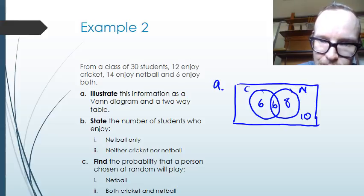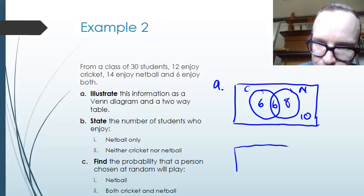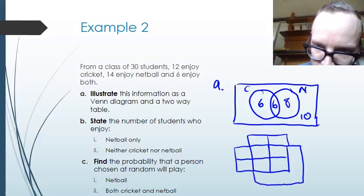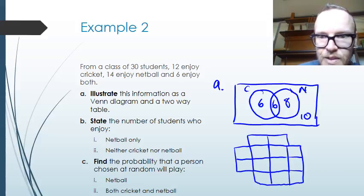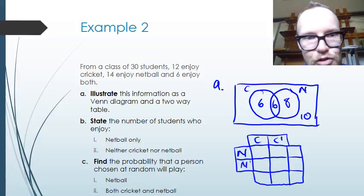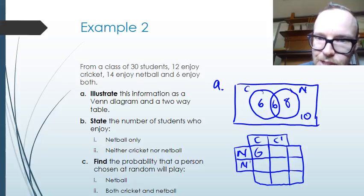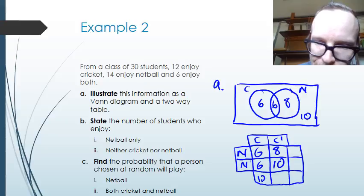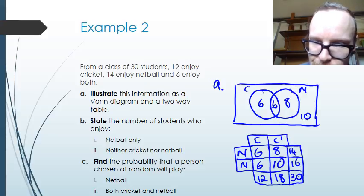Drawing up a two-way table with cricket, not-cricket as columns and netball, not-netball as rows: the number of students enjoying both cricket and netball is 6 — that's our intersection. The number enjoying neither is 10. The number enjoying netball but not cricket is 8, and the number enjoying cricket but not netball is 6. Adding up the totals gives us 12, 18, 14, and 16, with the overall total being 30.